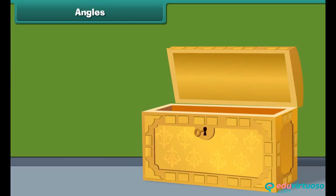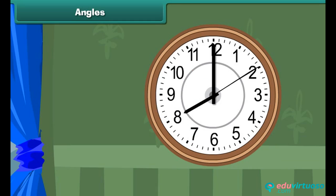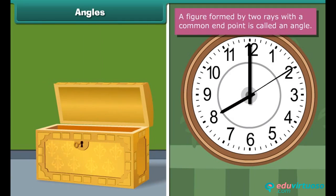Look at this box. What figure it makes? It forms an angle. Similarly, the minute hand and the hour hand in the clock form angles. A figure formed by two rays with a common end point is called an angle. An angle is represented by the given symbol. This is an angle ABC. It is represented as Angle ABC.